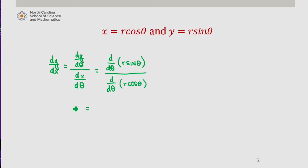So dy dx is equal to dr d theta sine theta plus r times the derivative of sine, which is cosine theta, over dr d theta cosine theta plus r times the derivative of cosine, which is negative sine theta.